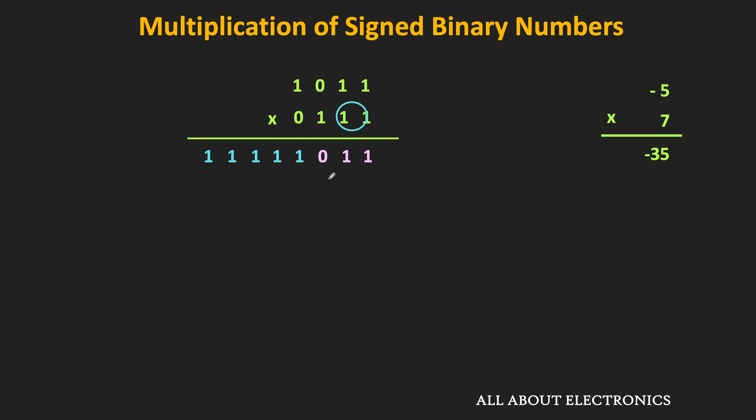Moving to the next bit of the multiplier, it is again 1, so the partial product is again equal to the multiplicand 1011, but left-shifted by 1 bit position. The sign bit of this partial product is 1, so we again extend the sign up to 8 bits. Moving to the next bit, it is also 1, so the partial product is again 1011, left-shifted by one more position, and sign-extended to 8 bits.